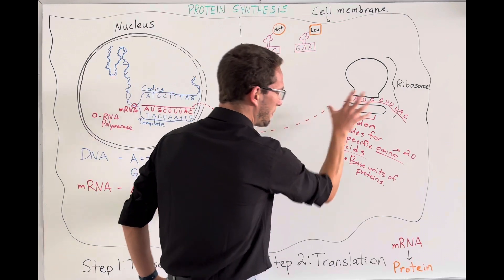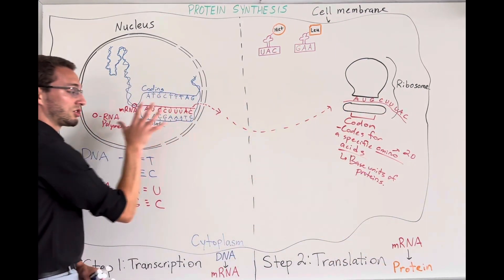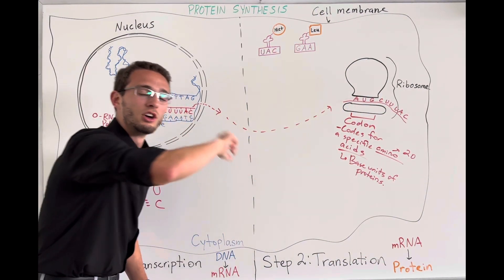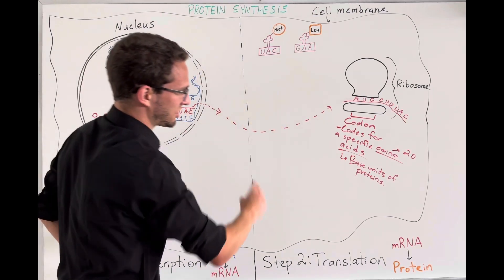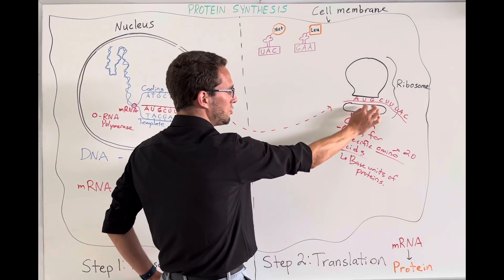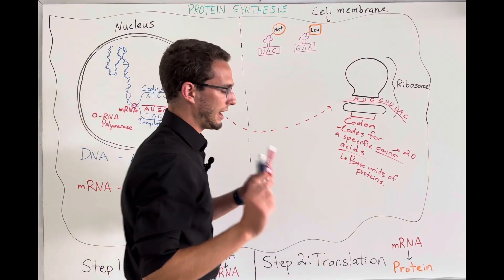So in this case, we need to put together the proper sequence of amino acids that was coded for originally in the DNA. So let's see what happens next. So I've got my codon, AUG, in the mRNA, chilling in the ribosome.